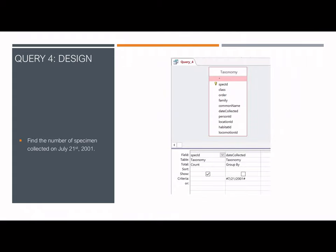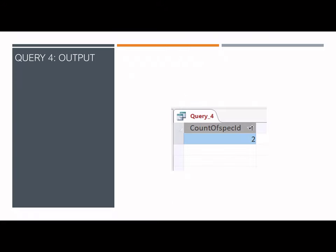Query 4 looks to find the number of specimens collected on July 21, 2001. Only the taxonomy table is used, counting all spec ID entries where the date collected matches that date. Only the count is set to display. The resulting output shows that only two specimens were collected on July 21, 2001.